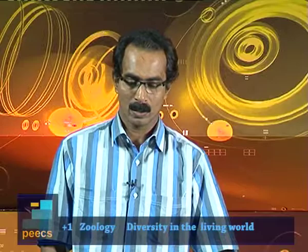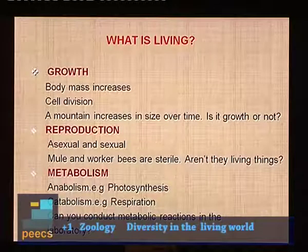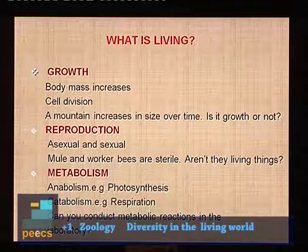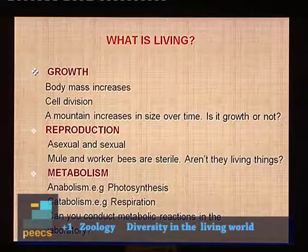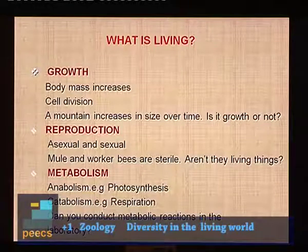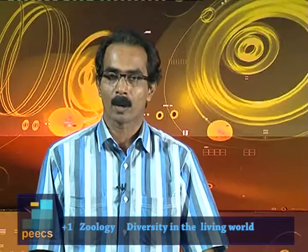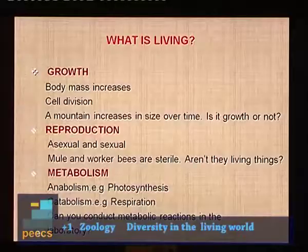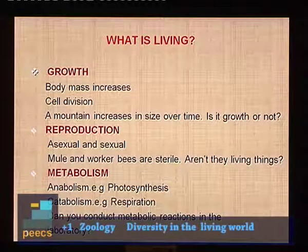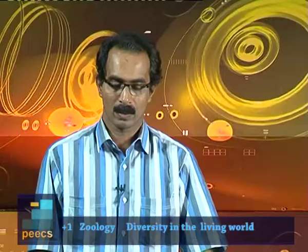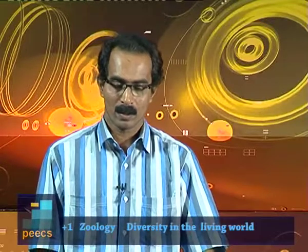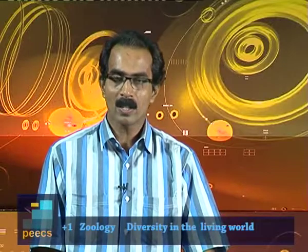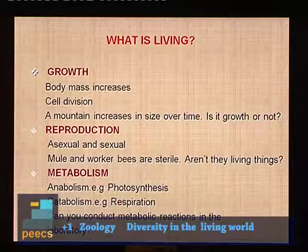The second characteristic feature of living things is reproduction. There are two types: asexual and sexual. Asexual means division of the body, like binary fission in amoeba or budding in hydra. Sexual means there should be sex cells like gametes in reproduction. We say all organisms reproduce, but see the mule — a hybrid of donkey and horse — which cannot reproduce. That means it is a sterile organism. Worker bees are also unable to reproduce, but they are still living things.